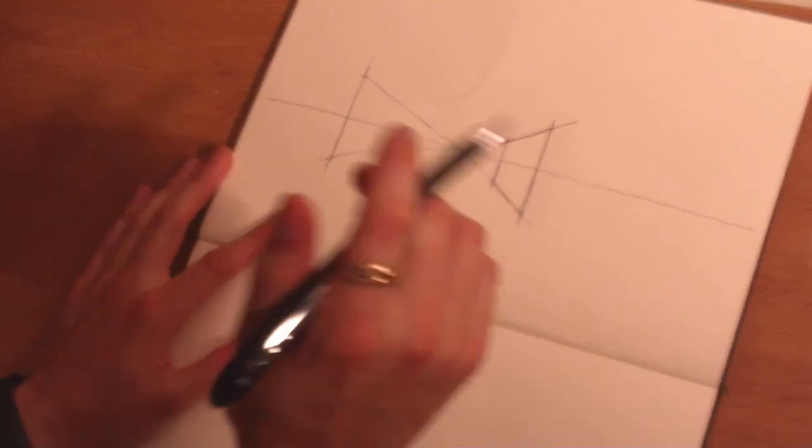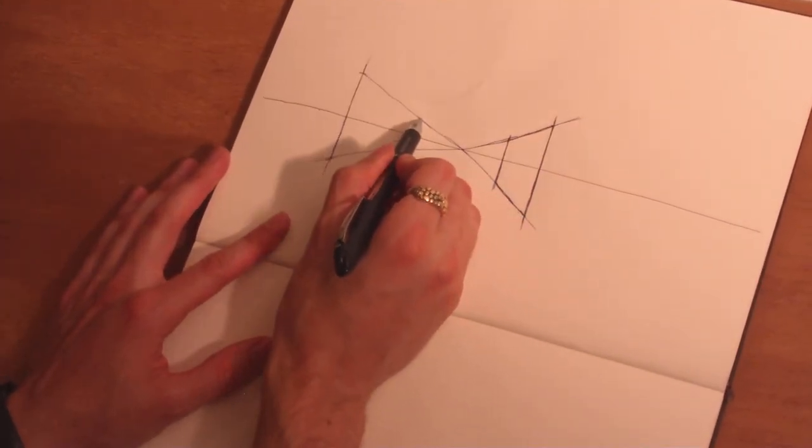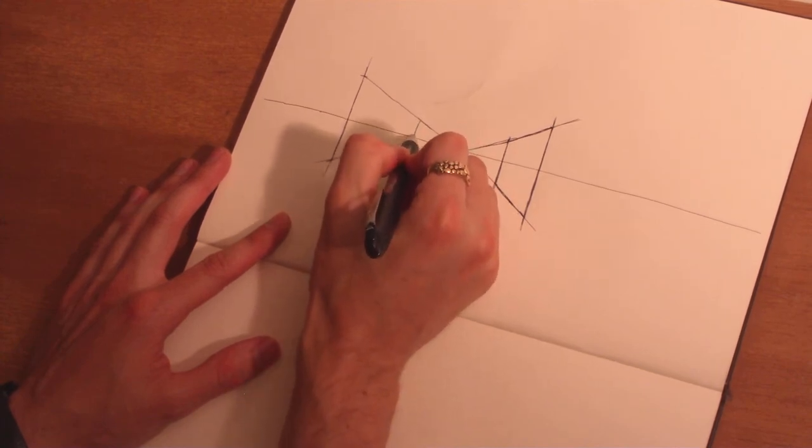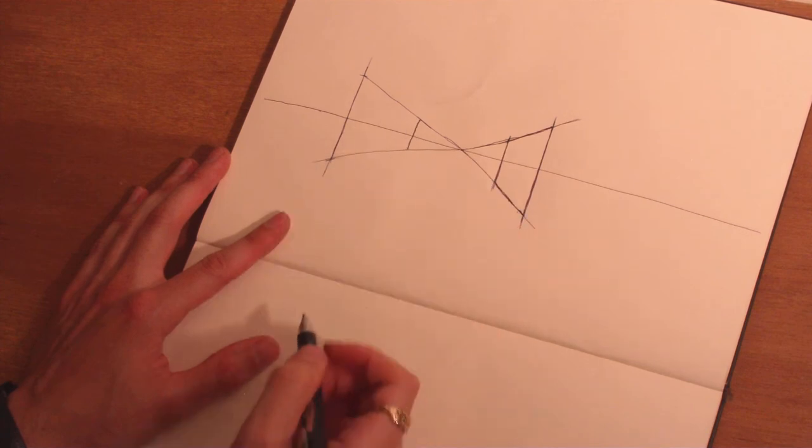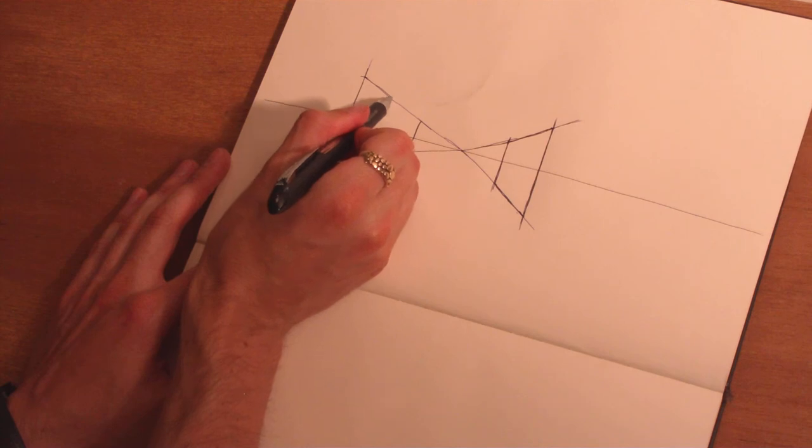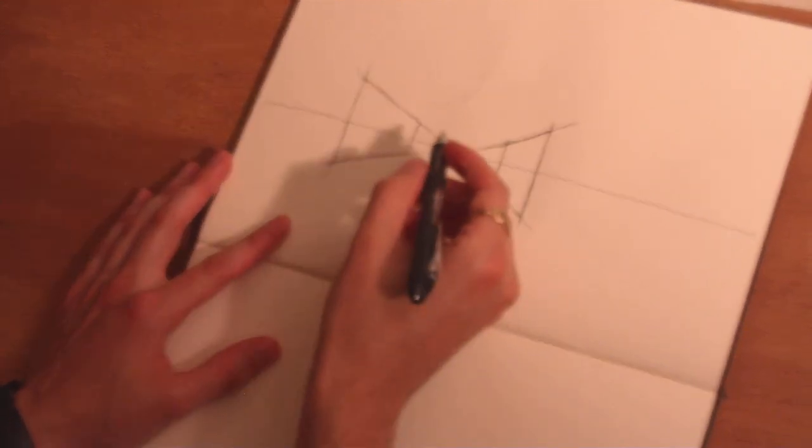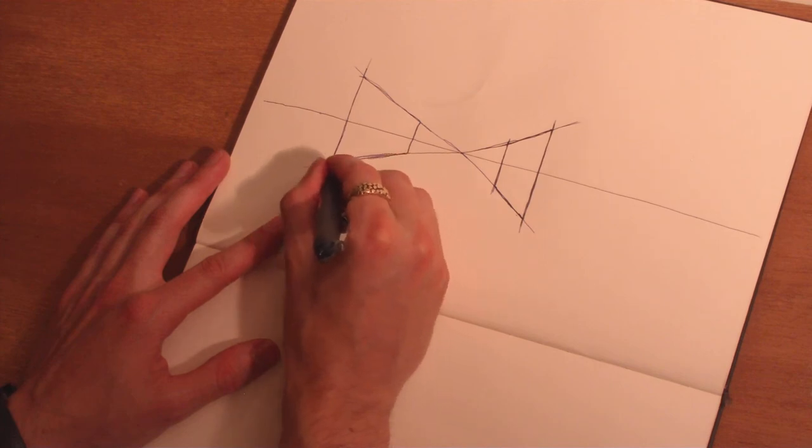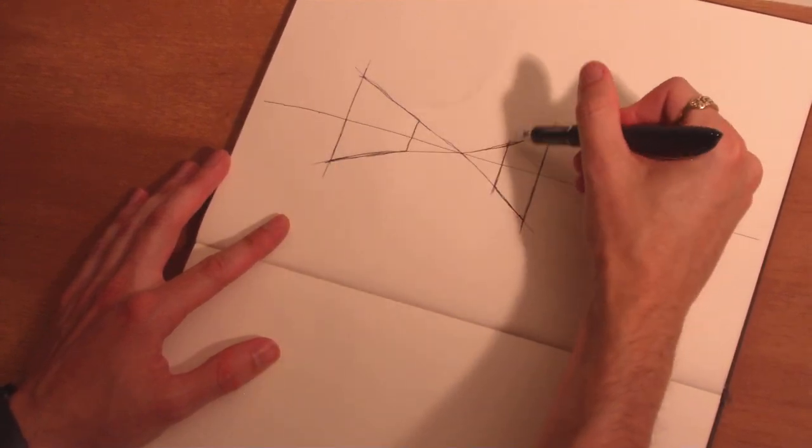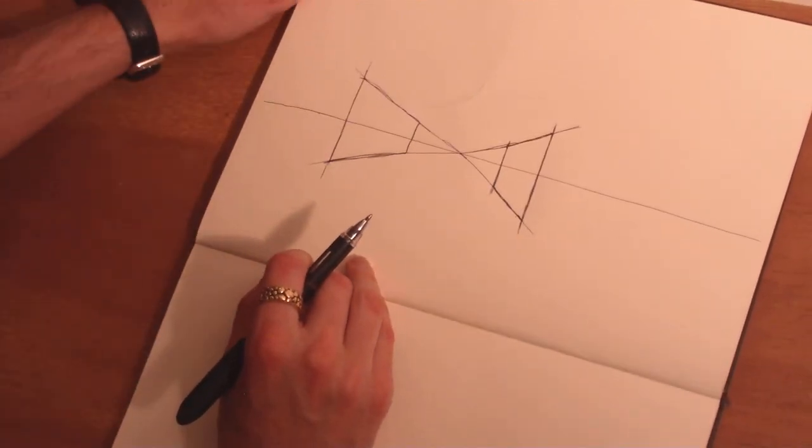Now you get the sense that space is receding. It's going away from you. And it's just by the creation of these simple planes drawing lines back to the vanishing point. So that's something to remember when you're using one-point perspective. All the verticals are going perfectly vertical and every other line is going to go back to the vanishing point one way or another.